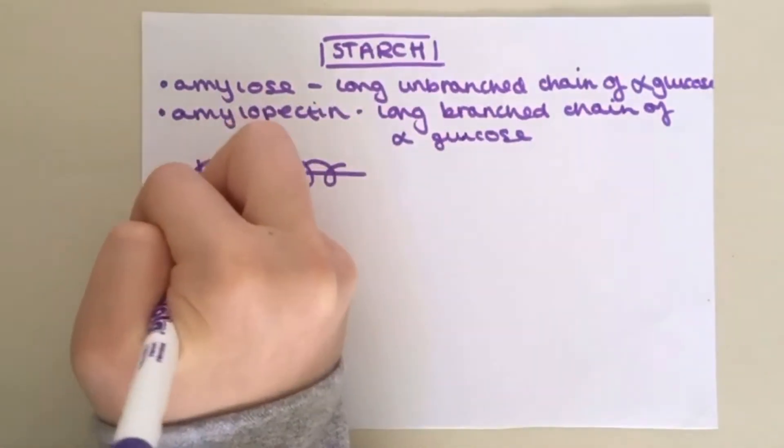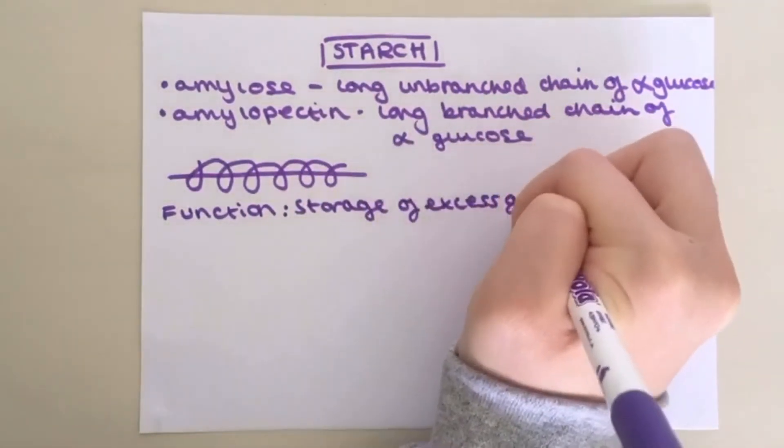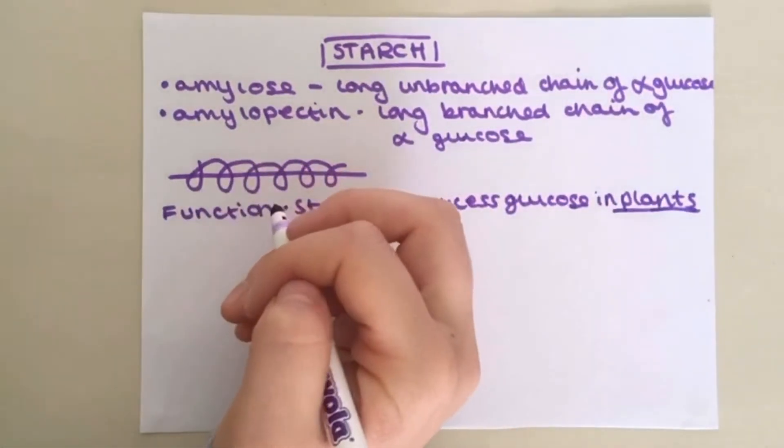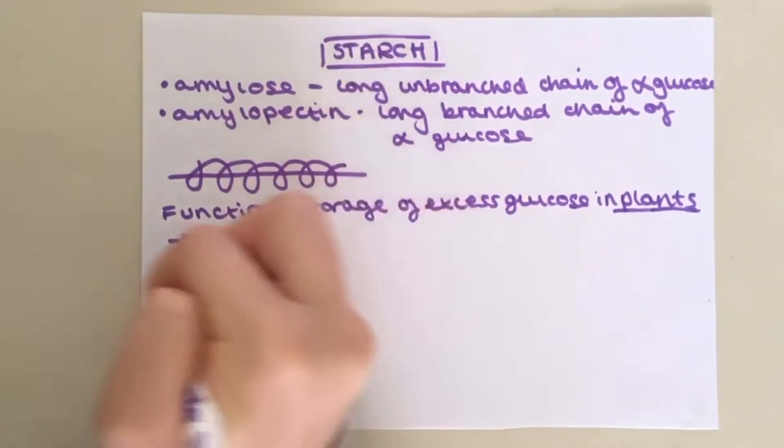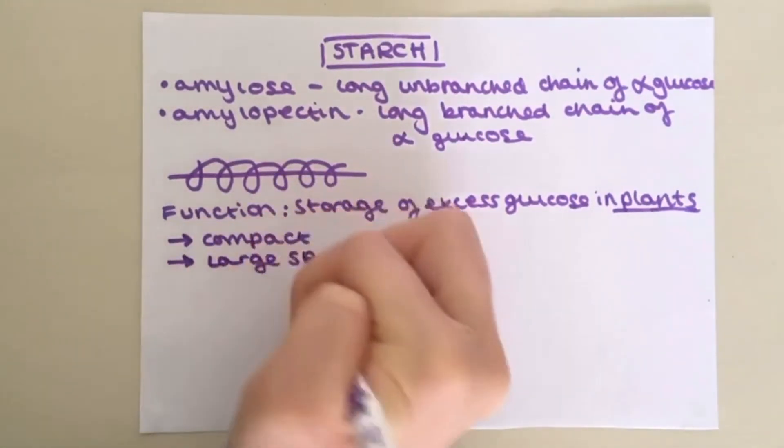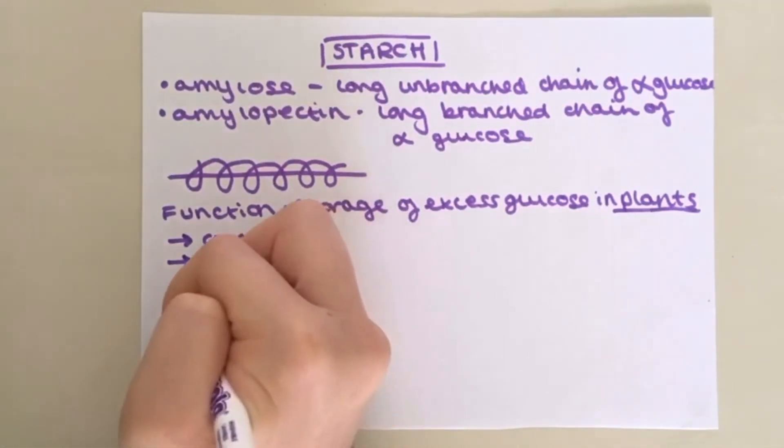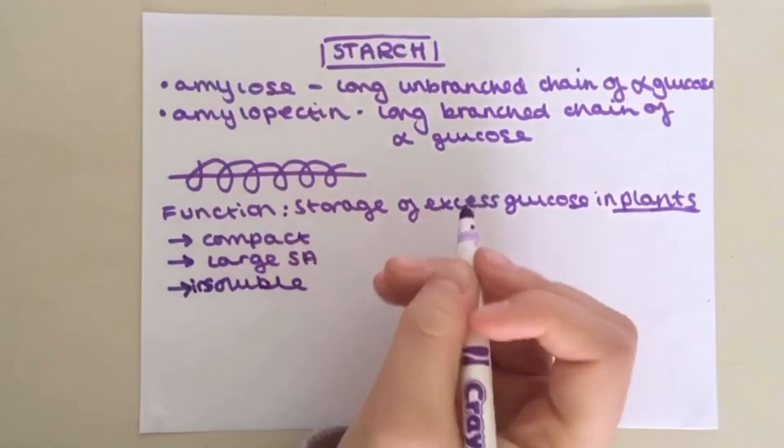The function of starch is to store excess glucose in plants and it is adapted to this in many ways. Firstly, its compact shape makes it great for storage as more can be stored in a small space. Secondly, the side branches on amylopectin give it a large surface area allowing the enzymes that break down the molecule to reach the glycosidic bonds easily so that glucose can be released quickly. Thirdly, starch is insoluble therefore it doesn't affect water potential within cells.